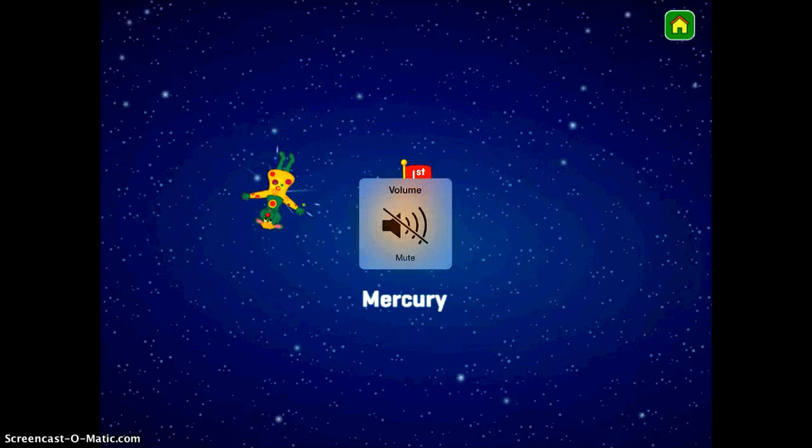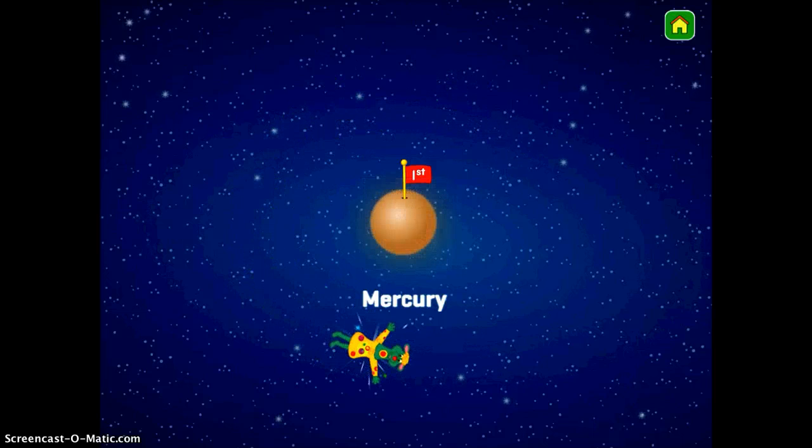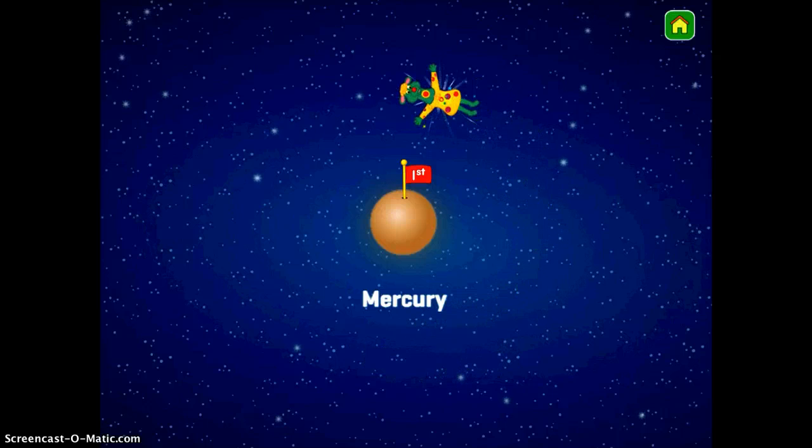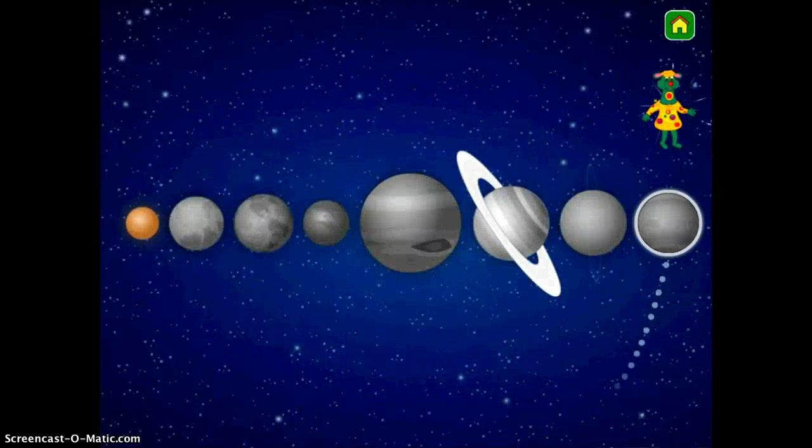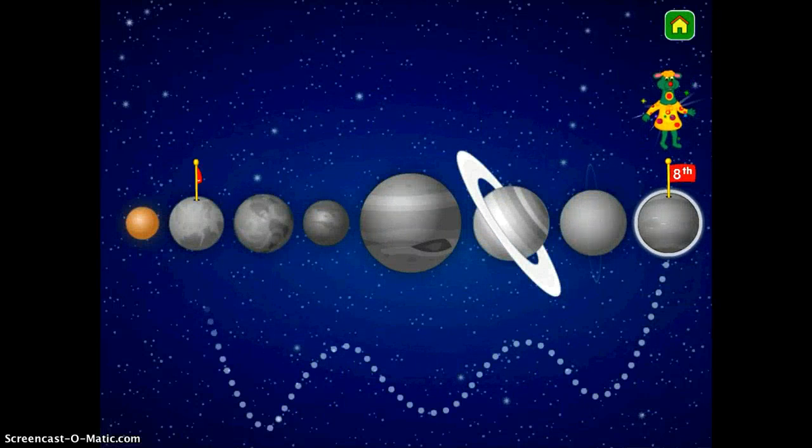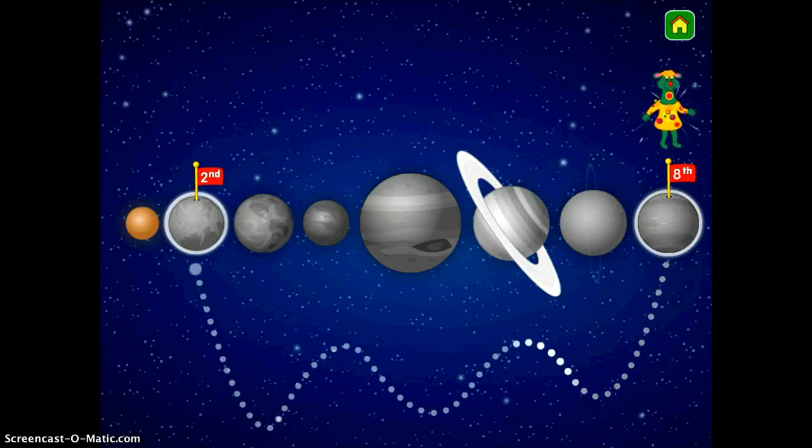So you get an idea. It will go through a little lesson on each planet. Once it's done with Mercury, it will take you back out and do kind of the same thing it did before where Polkaroo will be on a different planet. You'll trace the route to the new one and then you'll get some science lesson on each planet.